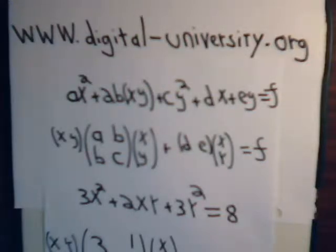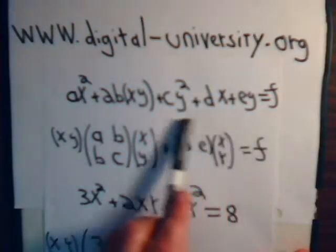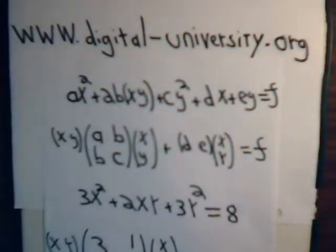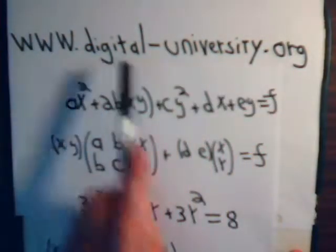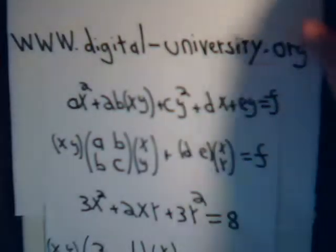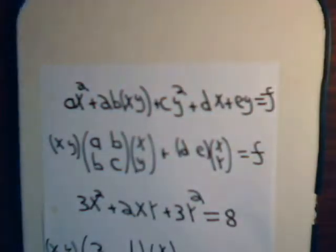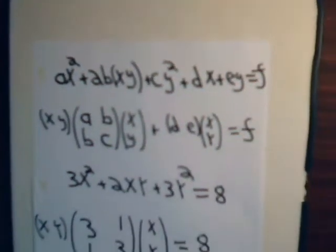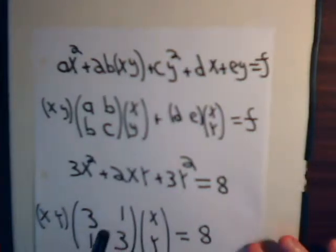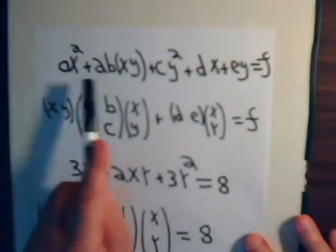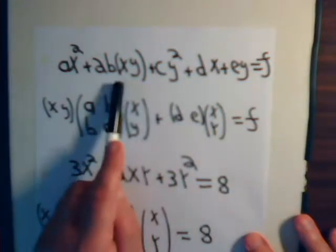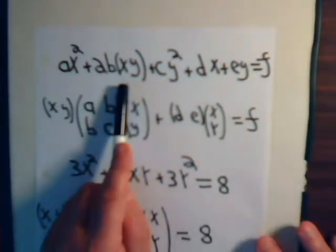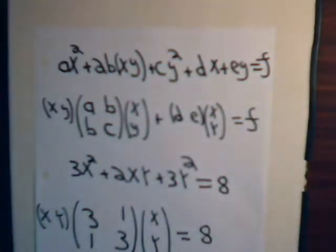We have been discussing quadratic forms — equations that have this general expression. For our quadratic expression we have an x-squared term, a y-squared term, an x term, a y term, and a cross product xy term, equal to some constant.